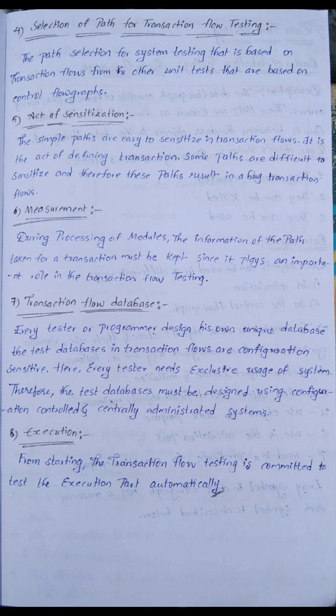Parts that are hard to sensitize result in bugs in the transaction flows. During the process of testing modules, information about the path taken by the transaction must be kept, since it plays an important role in the transaction flow testing.